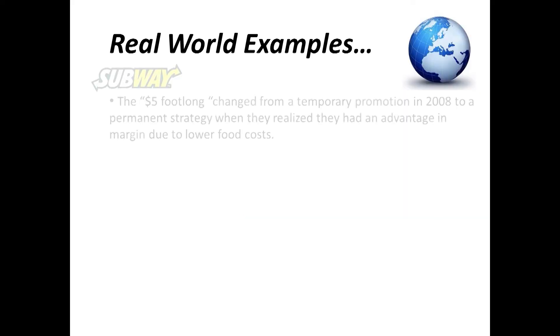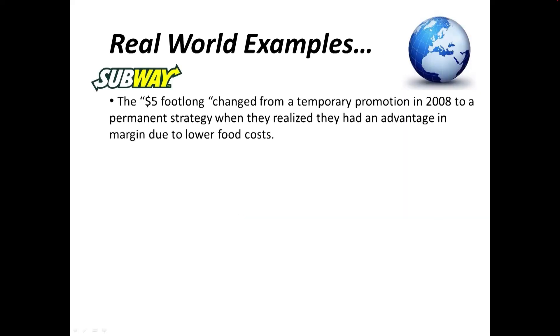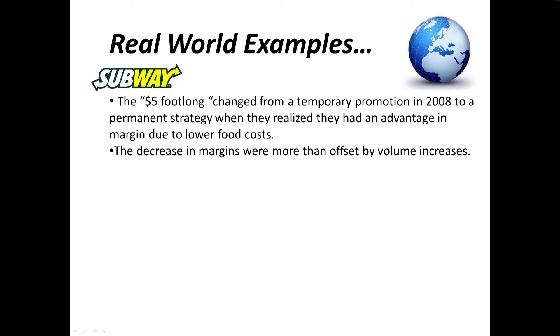We want to try to solve problems while they're still solvable. That's why we use these metrics and why we use this analysis. Some real-world examples: Subway did this sort of analysis back in 2008 and they realized they had an advantage in their margin due to their low food costs, and what they enacted was the $5 footlong campaign.